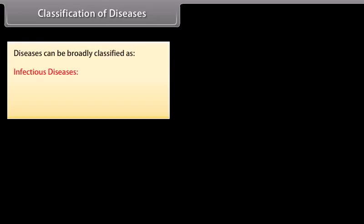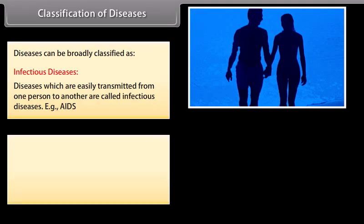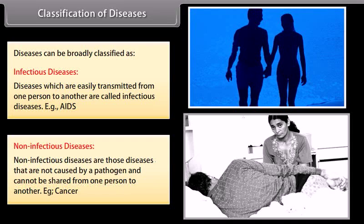Diseases can be broadly classified as infectious diseases and non-infectious diseases. Diseases which are easily transmitted from one person to another are called infectious diseases — for example, AIDS. Non-infectious diseases are those not caused by a pathogen and cannot be shared from one person to another — for example, cancer.